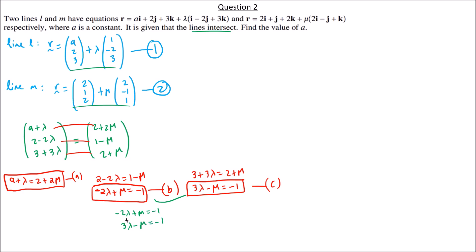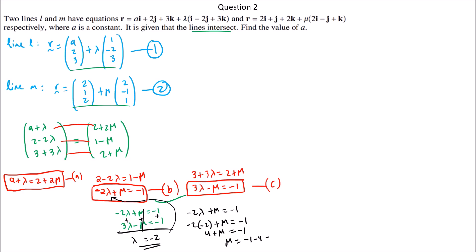Adding equations B and C: (−2λ + 3λ) + (μ − μ) = −1 + (−1), giving λ = −2. Substituting λ = −2 into equation B: −2(−2) + μ = −1, so 4 + μ = −1, giving μ = −5.